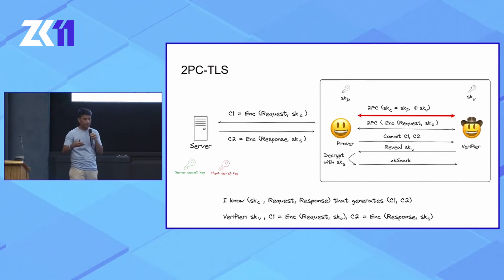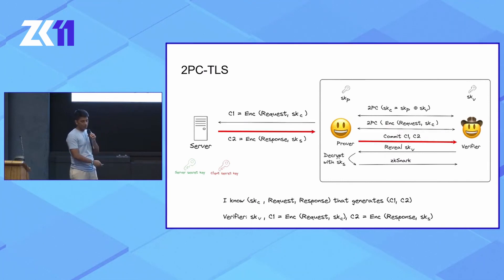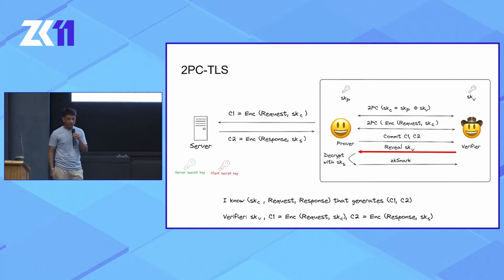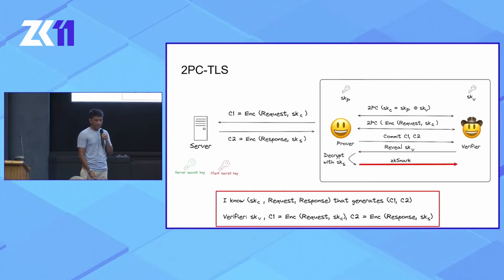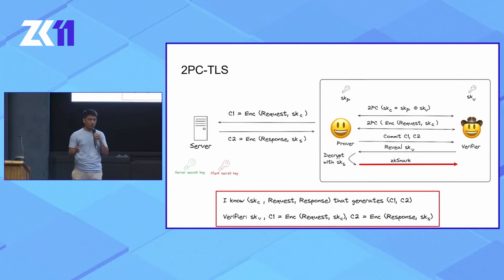Because neither party has the whole secret key, to send an encrypted request to the server, they need to come together and perform a 2PC encryption, then forward the encrypted request to the server. The server responds with an encrypted response, which the prover forwards to the verifier, essentially committing to the encrypted response. Once the TLS session is over, the verifier reveals their share of the secret key to the prover, and the prover uses that to decrypt the server response, then generates a ZK-SNARK of valid encryption and decryption and sends that to the verifier. If the proof verifies, the verifier is convinced about the authenticity of the response. This protocol is called the 2PC TLS protocol — it's an interactive protocol.